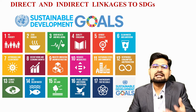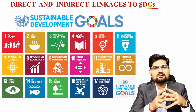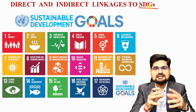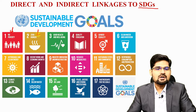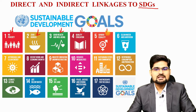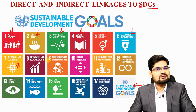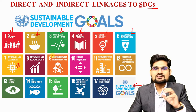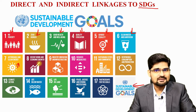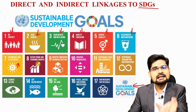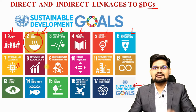Now let's understand the direct or indirect linkage with Sustainable Development Goals. We have talked about SDGs in other lectures as well because they are linked to many things in economic geography. The SDGs include no poverty, zero hunger, good health and well-being, quality education, gender equality, clean water and sanitation, affordable and clean energy, and others. All the food security factors — availability, accessibility, affordability, utilization and stability — are directly or indirectly linked to SDGs. Zero hunger itself is a direct linkage with SDGs.